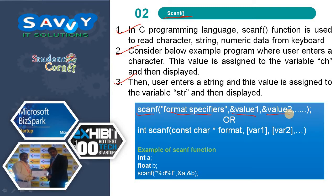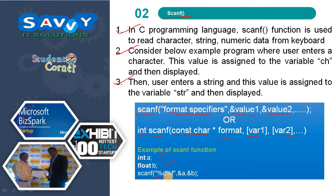The scanf function returns an integer. Its syntax is: scanf(const char *format, variable1, variable2, ...). For example, given int A and float B, you would write scanf("%d %f", &A, &B), where %d is the format specifier for integer and %f is for floating point value.